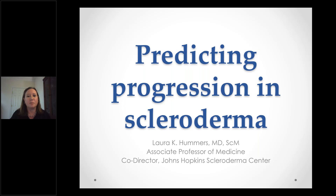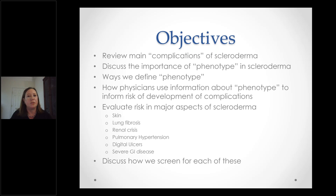I wish we were all together in person, but I'm really optimistic about next year. Our objectives today are to review what we consider to be some of the main complications of scleroderma, and discuss the importance of what we call phenotype in scleroderma. That word phenotype means recognizable features of the disease. I'd like to walk through how we think as physicians who specialize in scleroderma about how we use this information to inform what a patient's risk might be for development of complications.